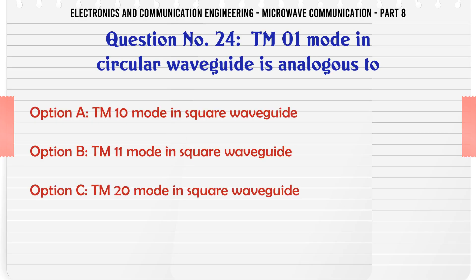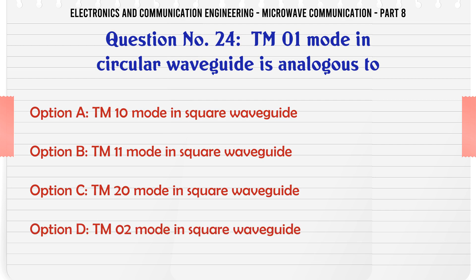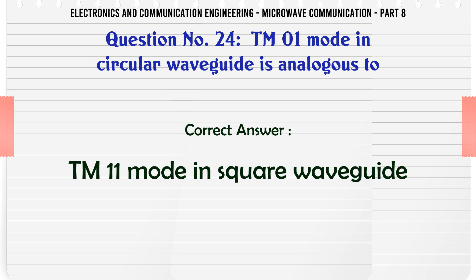TM01 mode in a circular waveguide is analogous to — A. TM10 mode in square waveguide, B. TM11 mode in square waveguide, C. TM20 mode in square waveguide, D. TM02 mode in square waveguide. The correct answer is TM11 mode in square waveguide.